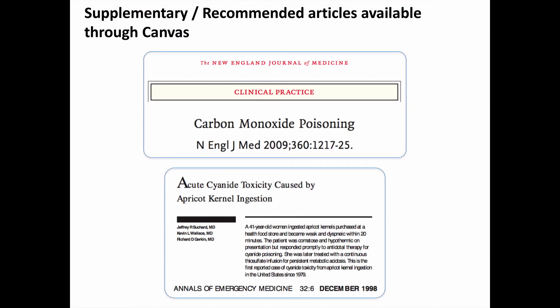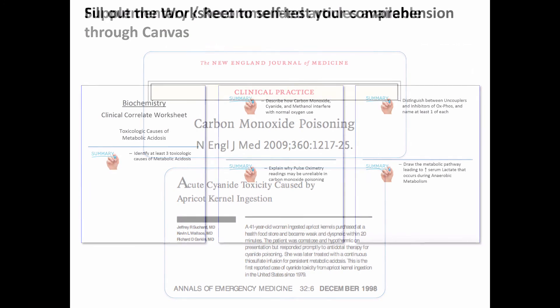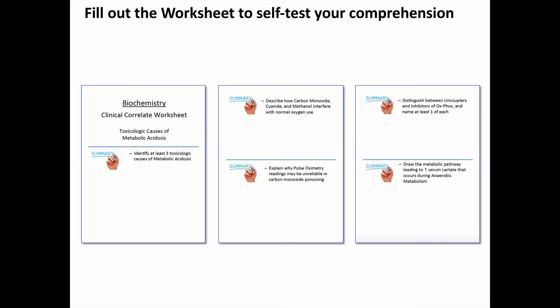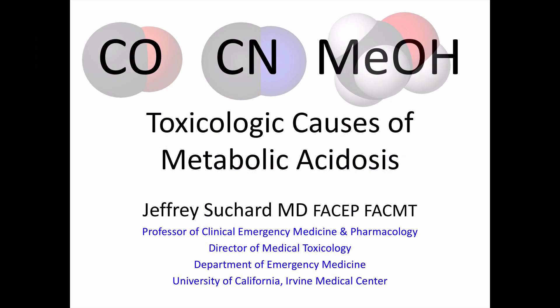There are a couple of supplementary recommended articles available through Canvas: a review article about carbon monoxide poisoning from the New England Journal of Medicine, and a case report about a woman who accidentally gave herself cyanide poisoning by eating apricot kernels, which contain cyanogenic glycosides. We are also providing a worksheet for you to fill out to self-test your comprehension — see how much you can do on your own before looking back through the video. If you can answer these questions from memory, you've learned the material about as well as you'll need to for USMLE Step 1 and for your clinical years. And that's all for now.